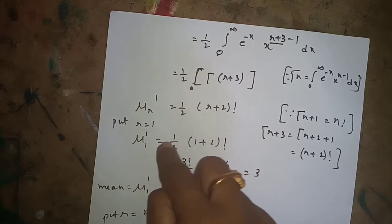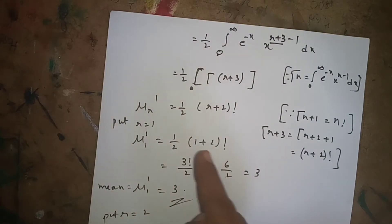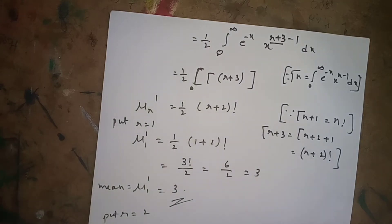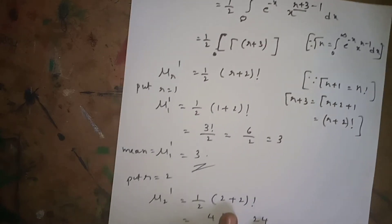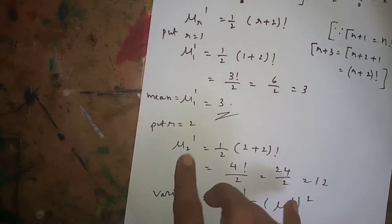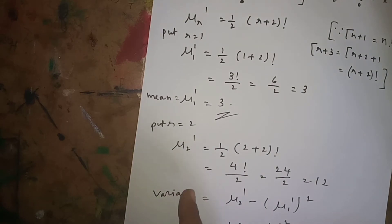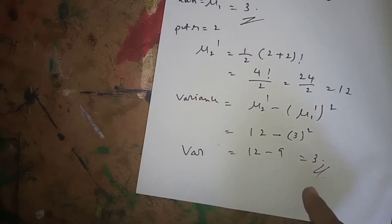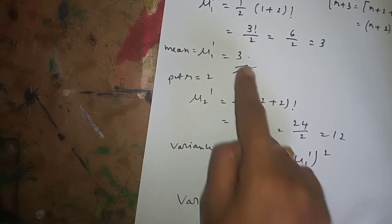Putting r=1: μ'_1 = (1/2)·(1+2)! = (1/2)·3! = (1/2)·6 = 3. So mean = 3. Putting r=2: μ'_2 = (1/2)·(2+2)! = (1/2)·4! = (1/2)·24 = 12. Variance = μ'_2 − (μ'_1)² = 12 − 3² = 12 − 9 = 3. Therefore variance = 3 and mean = 3.